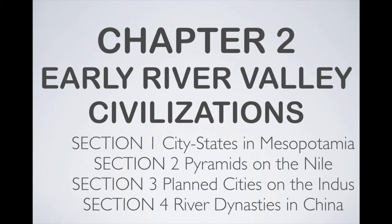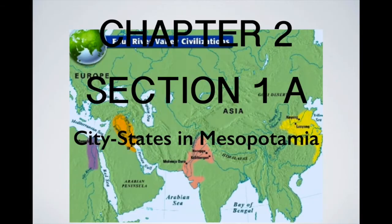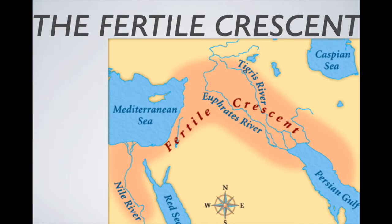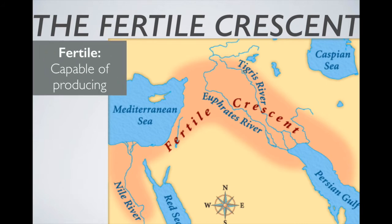Okay, so chapter two: early river valley civilizations. We're going to look at four in total, starting off with the city-states in Mesopotamia. This area of the world was known as the Fertile Crescent — fertile because it's capable of producing various agriculture.